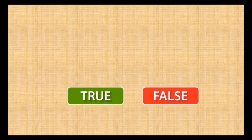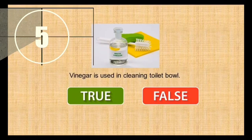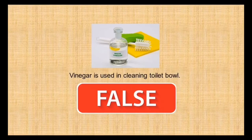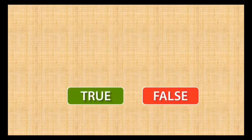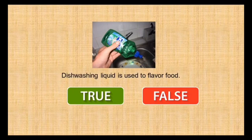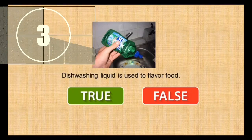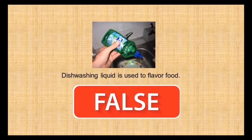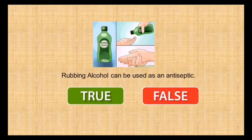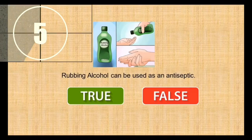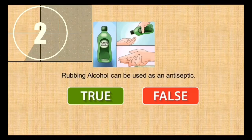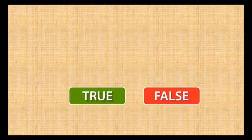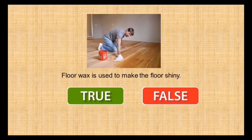True or false? Vinegar is used in cleaning toilet bowl. True or false? Dishwashing liquid is used to flavor foods. True or false? Rubbing alcohol can be used as an antiseptic. True or false? Floor wax is used to make the floor shiny.